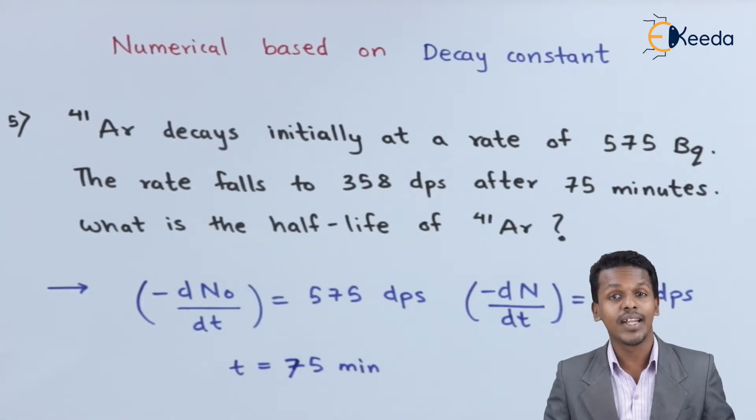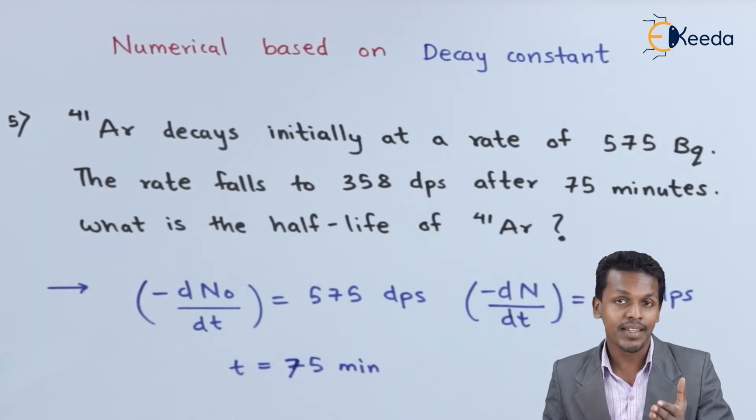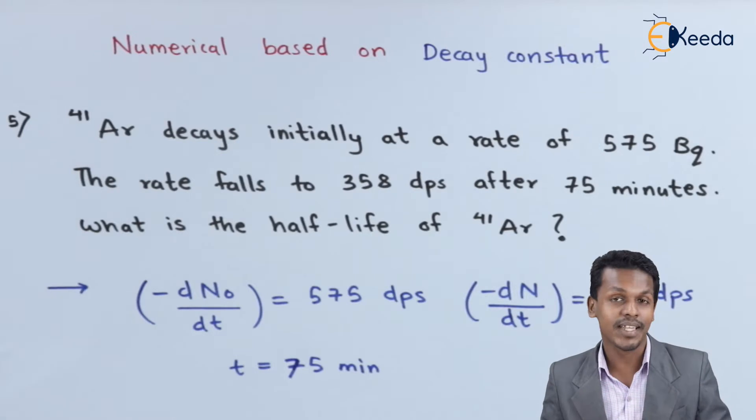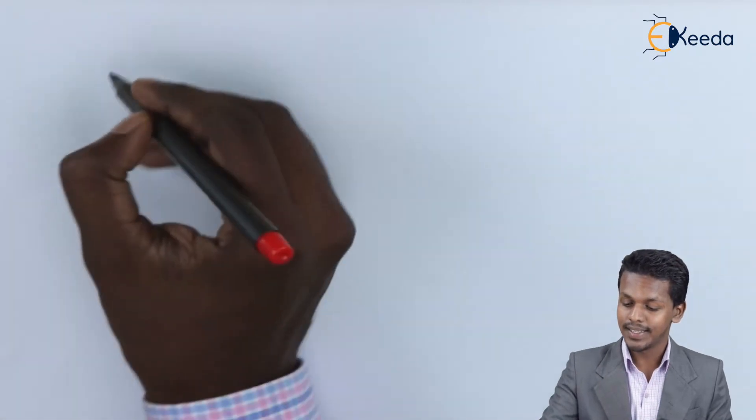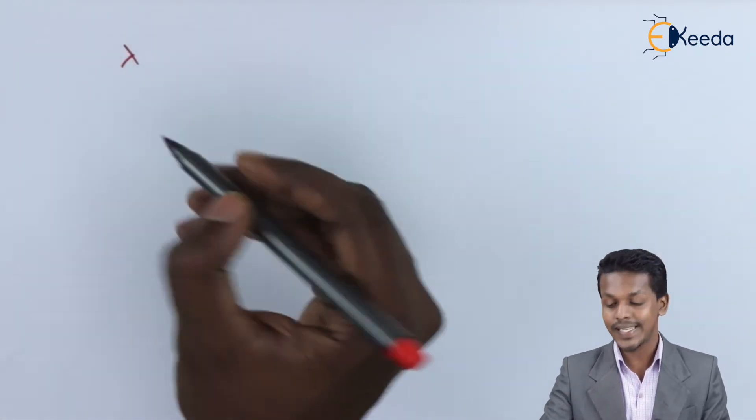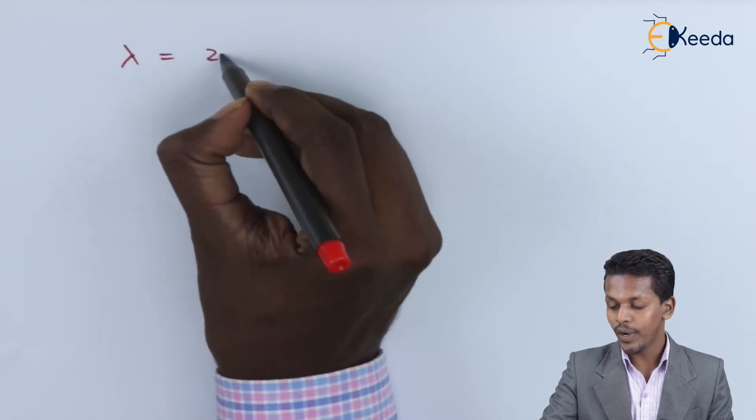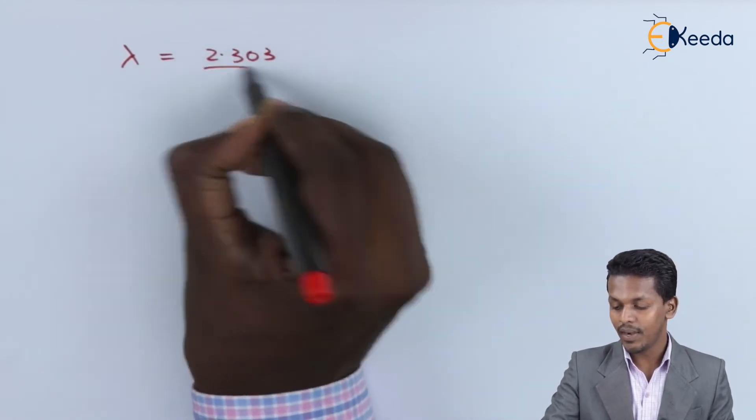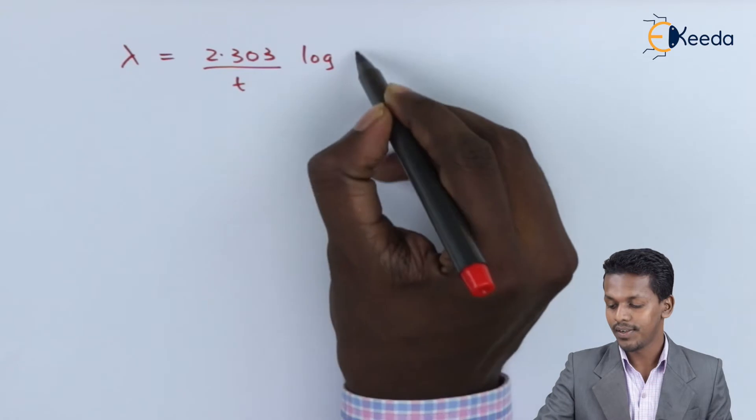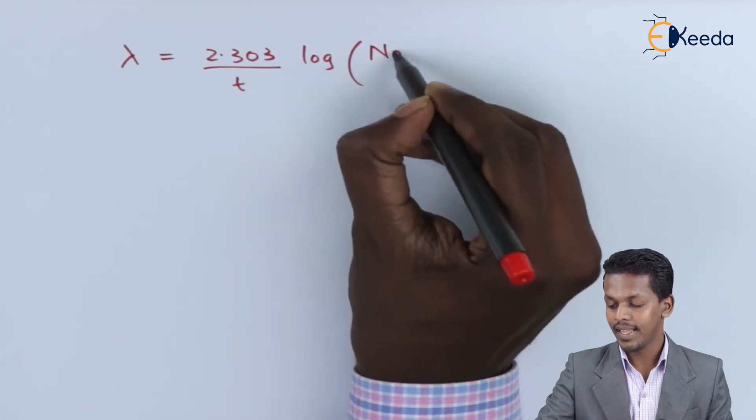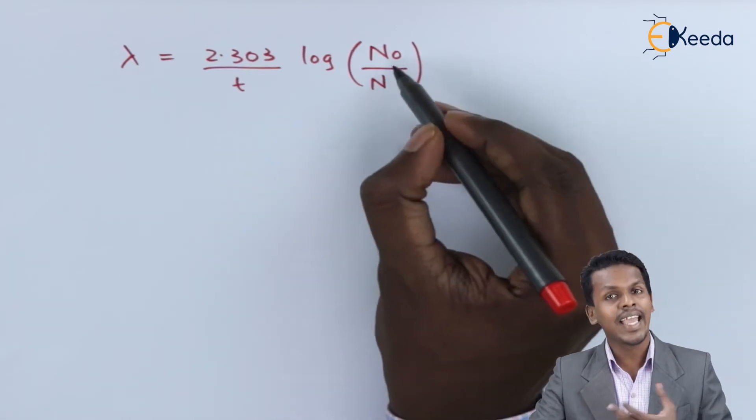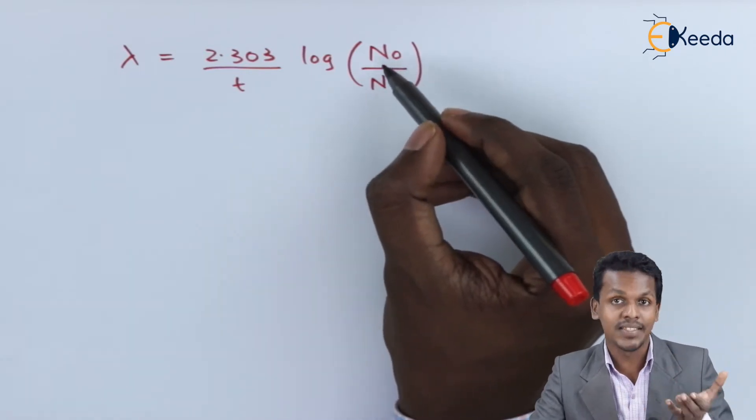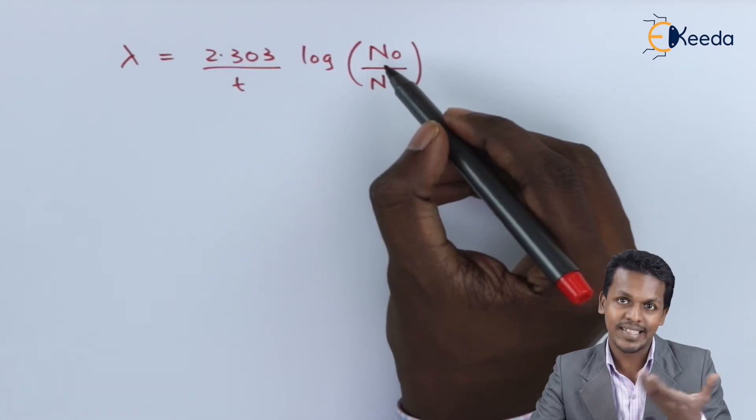Let's see how we can calculate the value of lambda (the decay constant), and then how we can calculate t½. So let us find out first what is the decay constant in this case. Therefore we have the formula: λ = (2.303/t) × log₁₀(N₀/N).